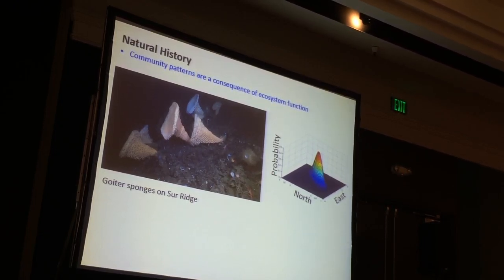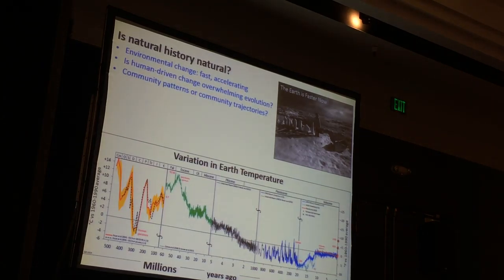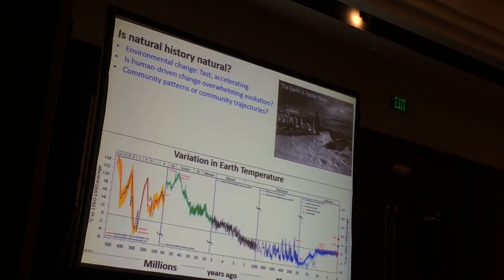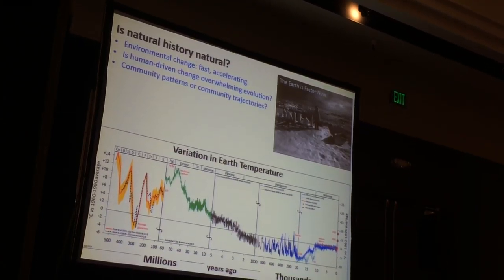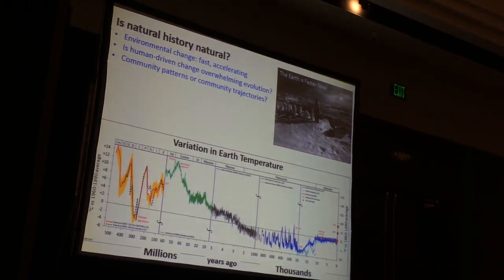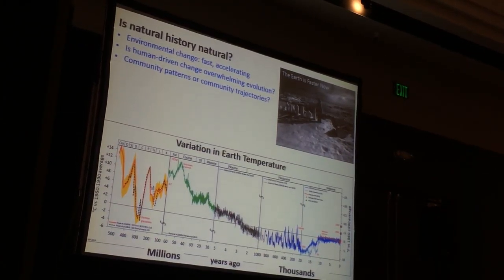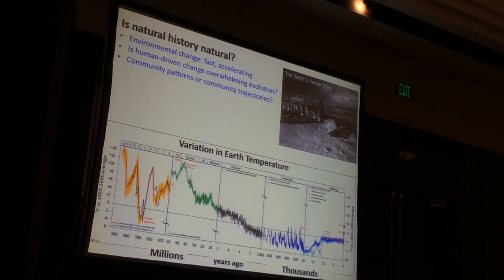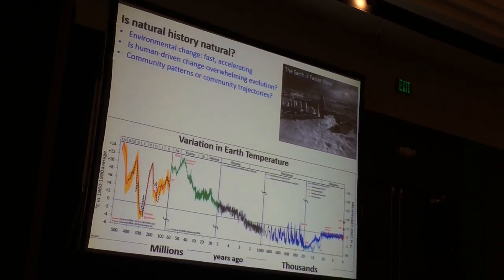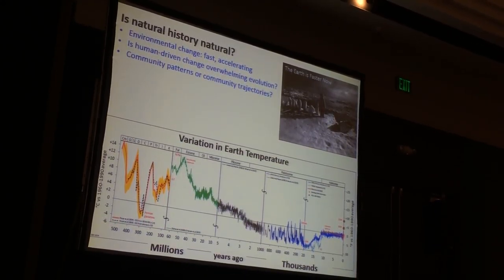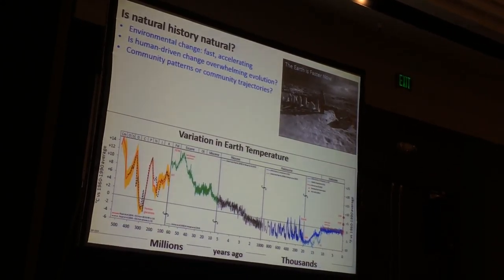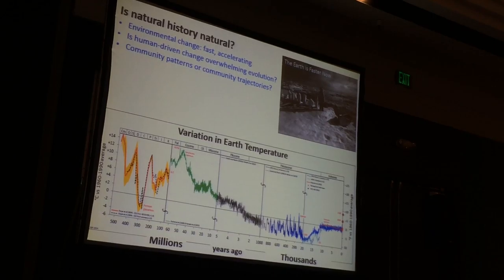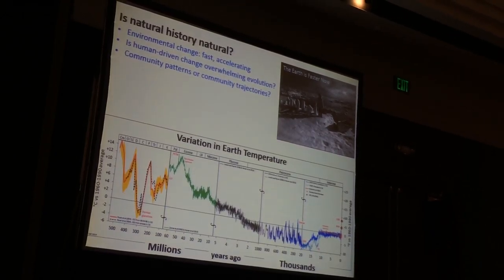We see on Sur Ridge or Davidson Seamount these skeletons of goiter sponges that have manganese crust on them. These are hexactinellid-class sponges, and their skeletons literally last for maybe tens to even hundreds of thousands of years. That abundance or standing stock we see is really the consequence of all those processes. And is natural history important? Sure it is. It's the stepping point off to try and understand how the system is functioning.